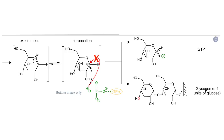Note that the glucose 1-phosphate that forms has the covalently attached phosphate on the alpha, or bottom face, as drawn in the figure. The structure of glycogen phosphorylase allows attack of its phosphate from the bottom, giving rise to the alpha isomer only of glucose 1-phosphate. The structure of the phosphorylase precludes access to the top face of the sugar molecule, so you get only one stereoisomer of glucose 1-phosphate from this reaction.